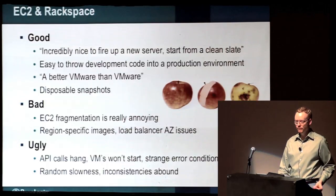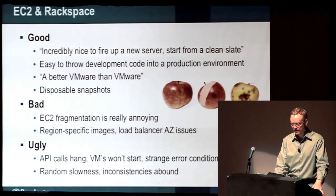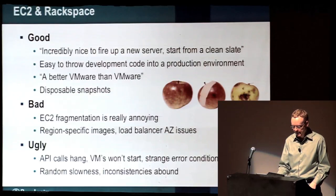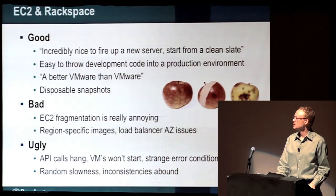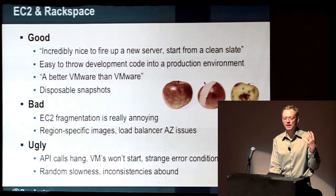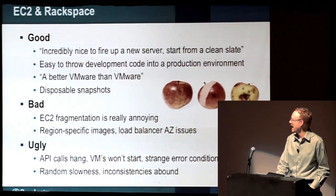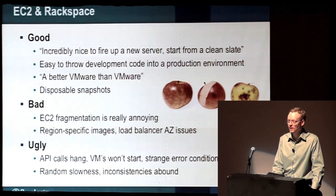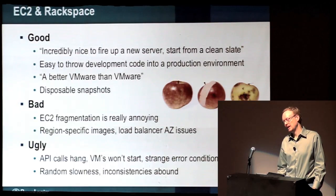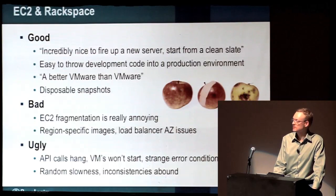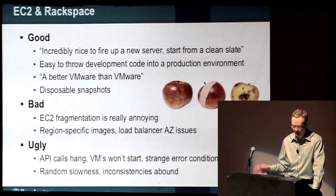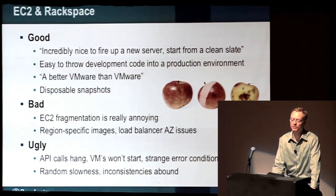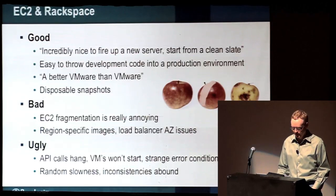EC2 and Rackspace: great for firing up new servers in a clean state, really easy for developers to test stuff — some of our guys called it 'a better VMware than VMware' — disposable snapshots. But fragmentation is annoying: you can't use one image across regions. Load balancer issues across availability zones — the documentation says one thing and it does something else. Things hang, instances won't start, random slowness, inconsistency abounds. When you're living in that world, you design for failure and bake it right in.